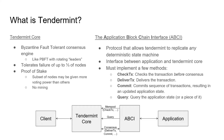The CheckTransaction method is responsible for checking that a transaction is properly formatted, has correct signatures, etc. This is the only one of the four methods that receives transactions before consensus has been run on them, so this method should not actually modify the application state at all. If you return an error code from this method, the transaction won't be included in a block.